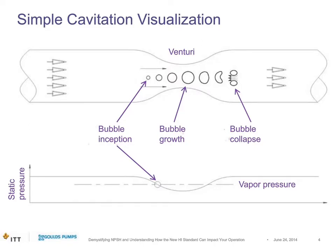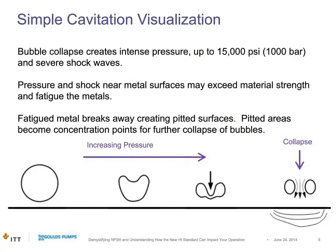Zooming in on bubble collapse: when these bubbles collapse, they create a really intense pressure field — up to 15,000 psi or 1,000 bar, according to Gülich's centrifugal pumps book, with severe shock waves. If these pressure and shock waves occur near a metal or any surface, they may exceed the material strength and fatigue it. That fatigued material breaks away, creating the pitted, matte surface characteristic of cavitation attack. These pits then become concentration points for further bubble collapse as the geometry changes.